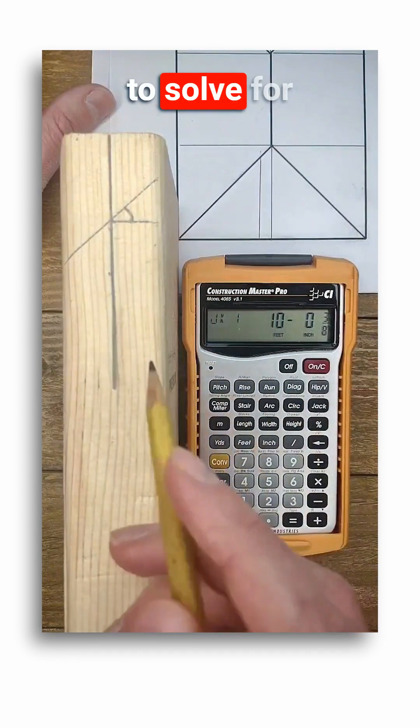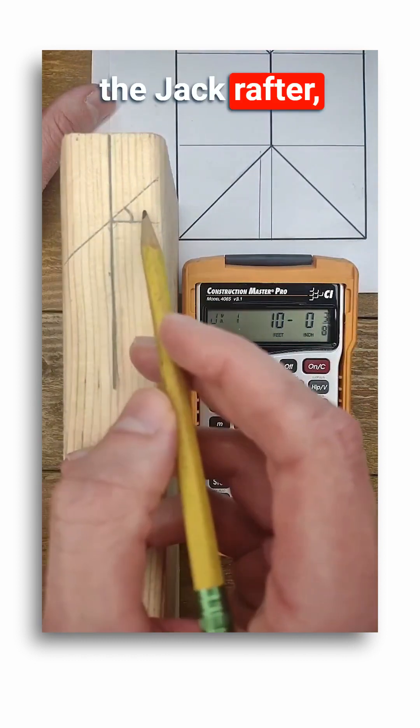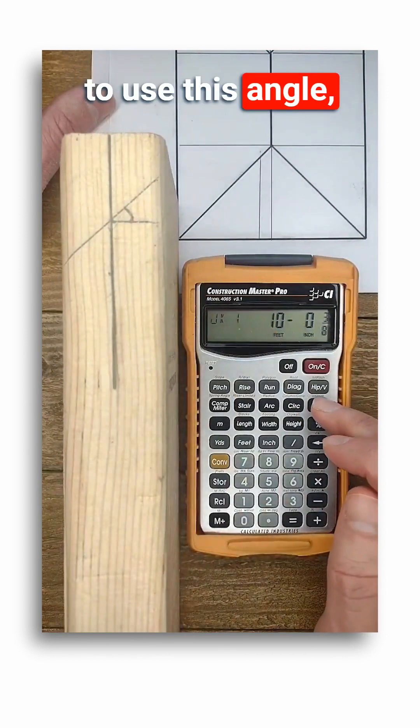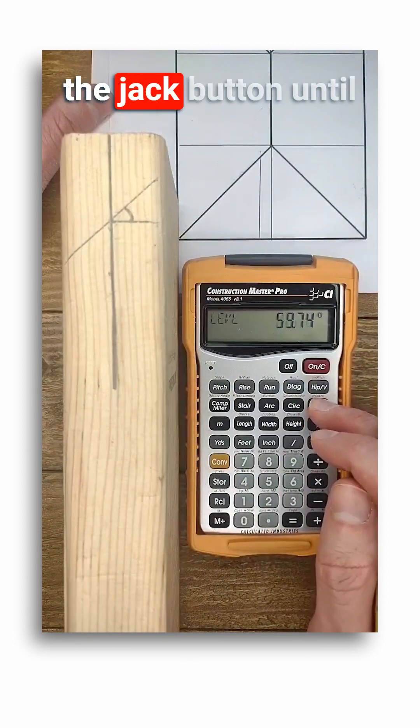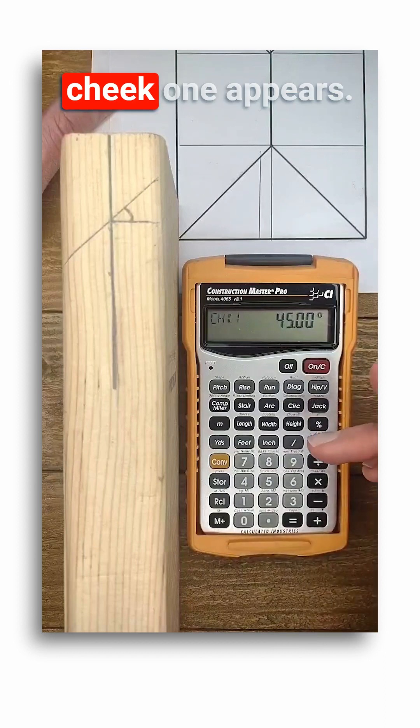Now if you wanted to solve for the long point of the jack rafter, it'd be pretty simple. You would just have to use this angle, which you could find by continuing to toggle through the jack button until cheek 1 appears.